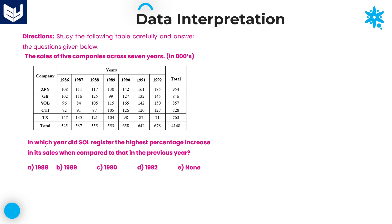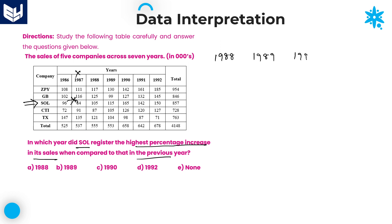Last question in this session: in which year did SOL register the highest percentage increase in its sales compared to that in the previous year? We start from 1988 since 86 to 87 shows a decrement, not an increment. The years to evaluate are 1988, 1989, 1990, 1991, and 1992.